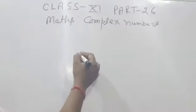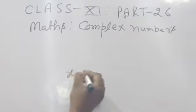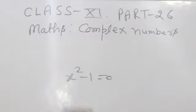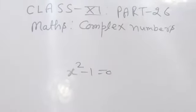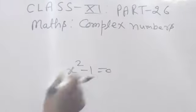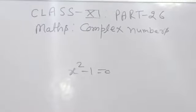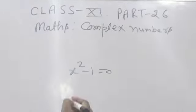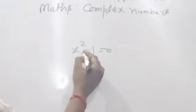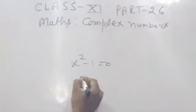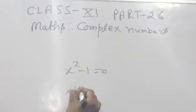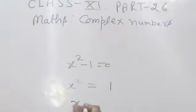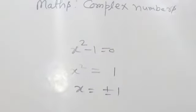As you know, x² - 1 = 0. How we can find the roots? Roots means the value of the variable x. Then x² - 1 means x² = 1, which means x = ±1.